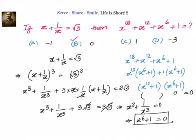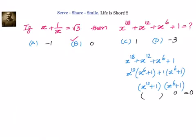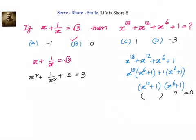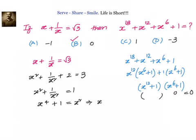Now let us see how we can solve this problem if instead of cubing both sides we square it on both sides. We have x plus 1 by x equal to root 3. Squaring both sides: x square plus 1 by x square plus 2 equal to 3. Simplifying: x square plus 1 by x square equal to 1, which gives x power 4 plus 1 equal to x square, or x power 4 minus x square plus 1 equal to 0.